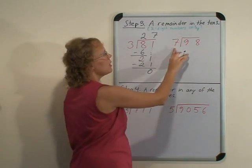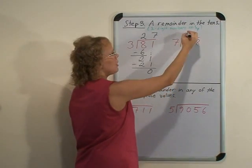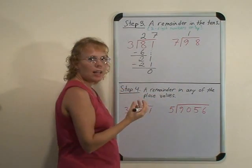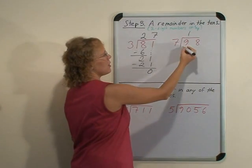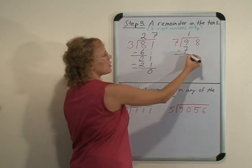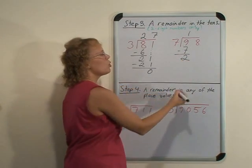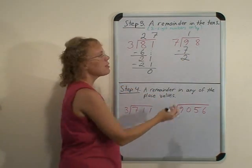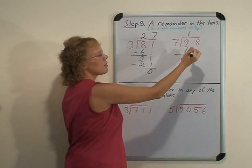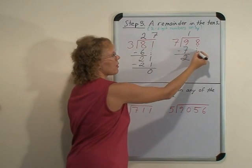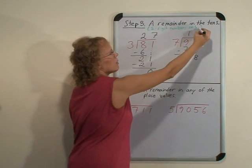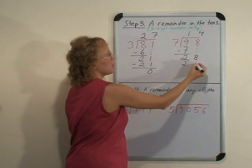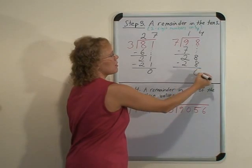Another example: 7 goes into 9 tens once, but it is not exact, so that is why we have to now find the remainder by multiplying and subtracting. 1 times 7 is 7, and subtract to find the remainder of 2 tens. And now we add the 8 to these 2 tens by dropping down the digit. And then 7 goes into 28 four times. 4 times 7 is 28, and no remainder.